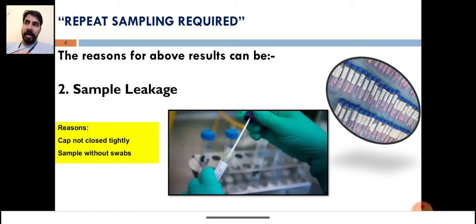While transporting, when the samples are received in our lab, we don't find any sample in the tube. This will lead to repeat sampling required because we cannot process an inadequate amount of sample in the vial. We need a specific amount of sample to start RNA extraction and do RT-PCR.